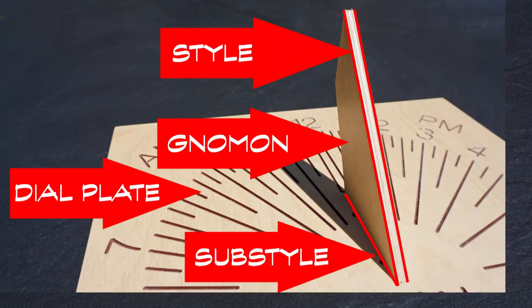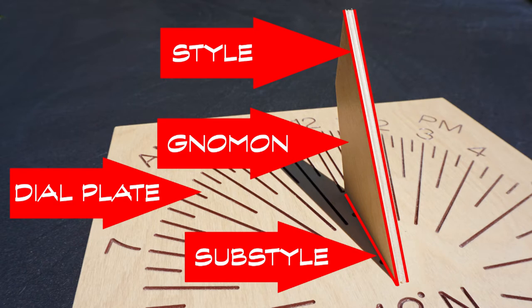Before we dive in, it would help to review a few important sundial terms. The surface with the hour lines is called the dial plate. The shadow casting device is called the gnomon. The edge of the gnomon that casts the shadow is called the style. There may be two styles, as the gnomon usually has some thickness to it, and where the line of the style meets the dial plate is called the substyle.